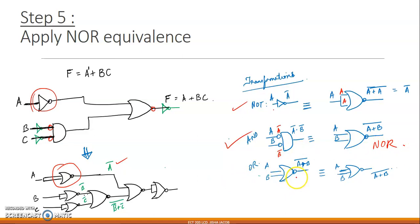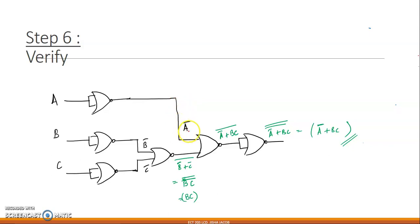For OR gates with a bubble at the output, that is already a NOR gate itself — nothing more to do. So in this circuit, for the NOT gate you insert a NOR gate equivalent, and for the AND gate with bubbles you apply the NOR transformation. To verify: A gives A̅, then B and C through a NOR gate give B̅ + C̅ whole bar = bc. Passing A̅ and bc to another NOR gate gives A̅ + bc whole bar, then through a final NOR gate gives A̅ + bc — our original function.